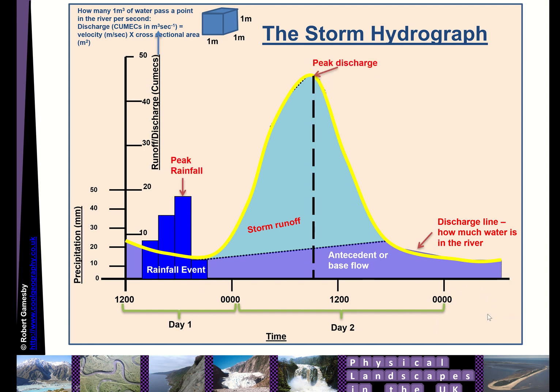That discharge line represents how much water is in the river at any given time. The line represents your peak discharge and your peak rainfall. The gap between the two is the lag time — that's the difference between peak rainfall and peak discharge. This is important to know because it gives flood planners awareness of how much time they have before a river reaches its peak level, so they can warn people in flood-prone areas. The longer the lag time, the less likely we are to have a flood, or the more time we have to prepare.